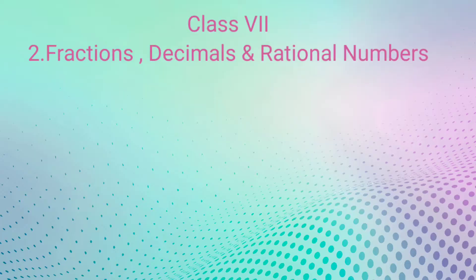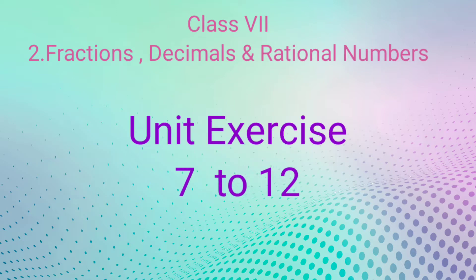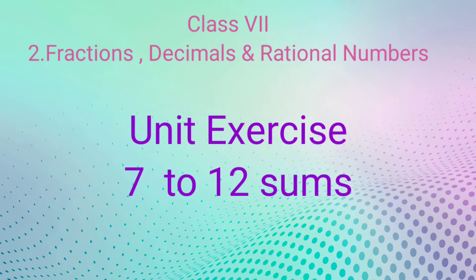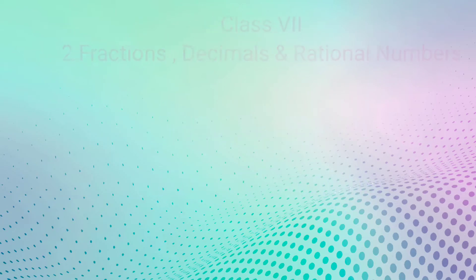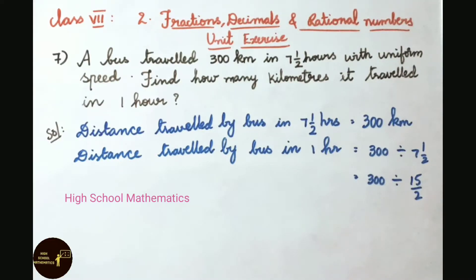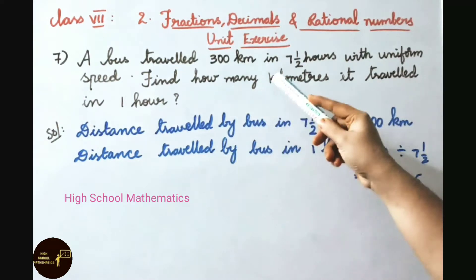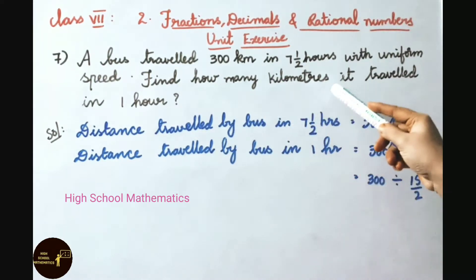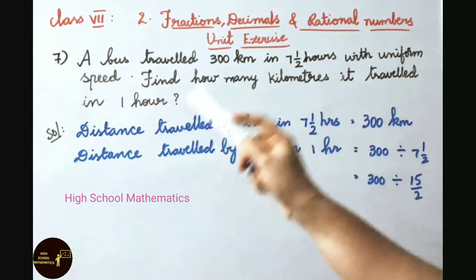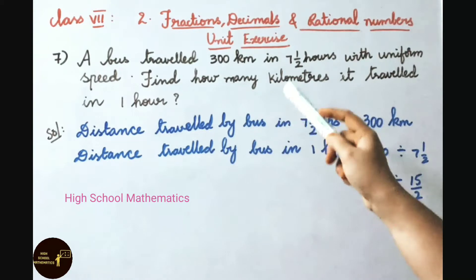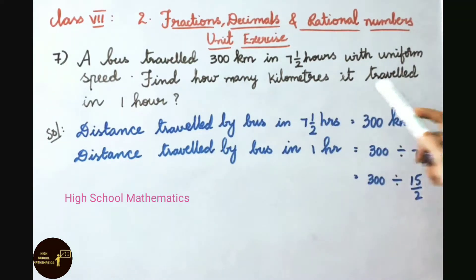Hello everyone, welcome to High School Mathematics channel. Today we are going to learn Class 7 Chapter 2 Fractions, Decimals and Rational Numbers, Unit Exercise, 7th sum onwards. Question number 7: A bus traveled 300 kilometers in seven and a half hours with uniform speed. Find how many kilometers it traveled in one hour.